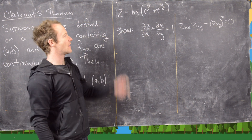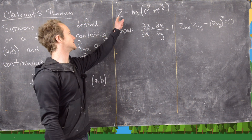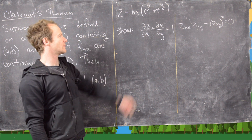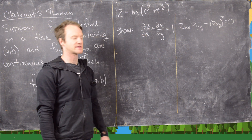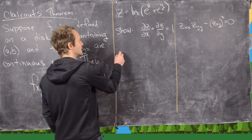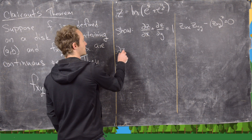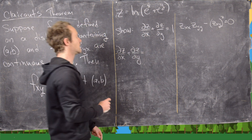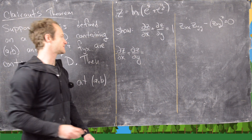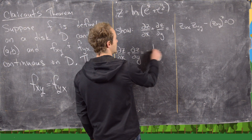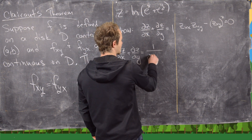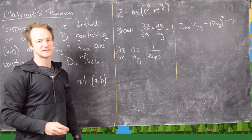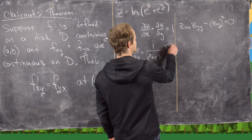For our last example, let z = ln(e^x + e^y). We want to show that ∂z/∂x + ∂z/∂y = 1. The partial with respect to x is 1/(e^x + e^y) times the derivative of (e^x + e^y) with respect to x, which is just e^x.